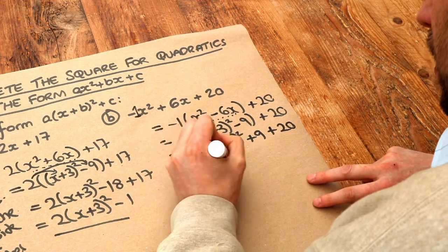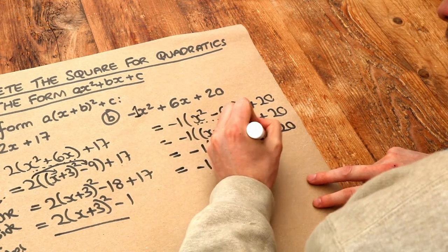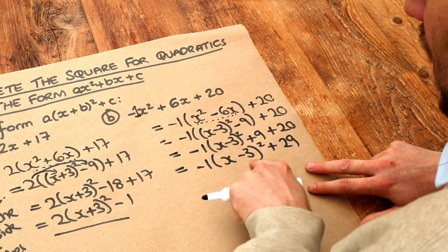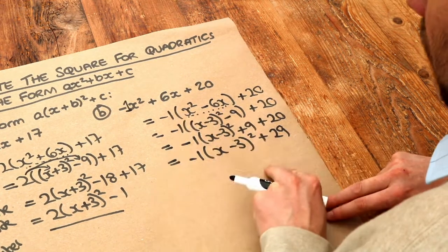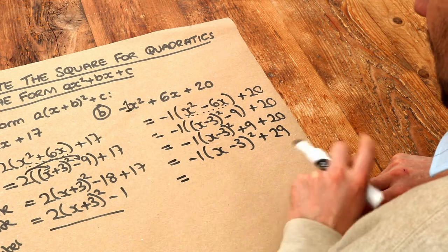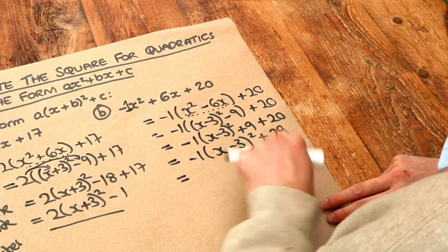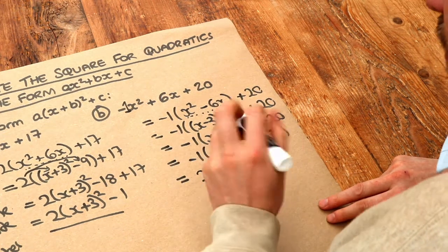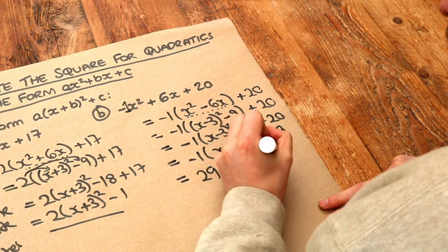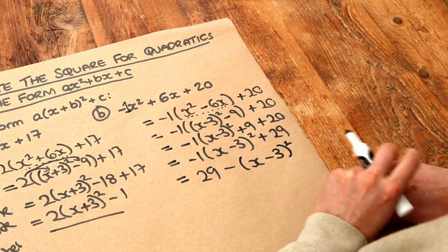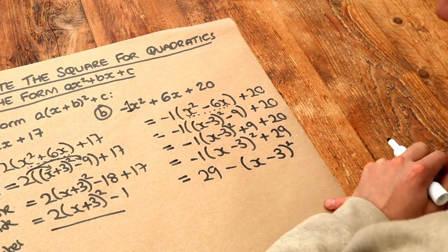And 9 plus 20 is 29. So it's minus 1 x minus 3 squared plus 29. Now, whenever we have a negative term followed by a positive term, we tend to reorder them. So it would be better to write the 29 minus 1 x minus 3 squared. So 29 minus... We don't really need that one there, do we? So it's just 29 minus x minus 3 squared. And that's the preferred form, because that looks a bit tidier than that.